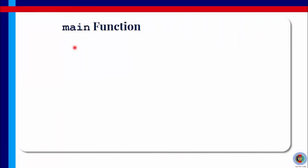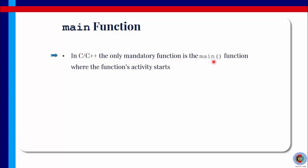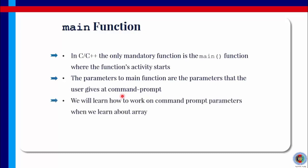In C/C++, there is one function that we call the main function. And at this point, you may have seen the main function many, many times. Because every time you start a program in Visual Studio or in any compiler, you will see int main and bracket. That is what you call the main function. In C/C++, the only mandatory function is the main function, where the function's activity starts. So if you want to trace the flow of execution in a C/C++ program, you first should locate where the main function is. The parameters to the main function are the parameters that the user gives at command prompt. This you will learn later about command line parameters. We will learn about this when we start learning about arrays.